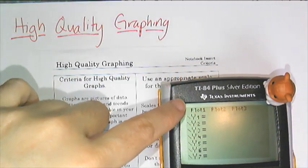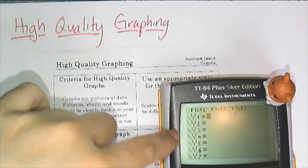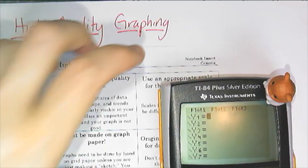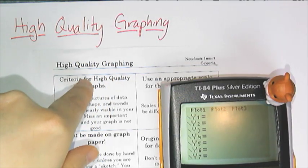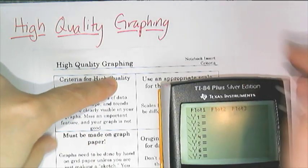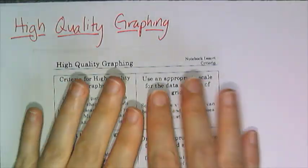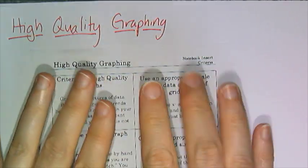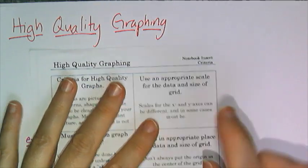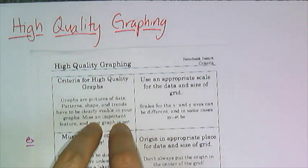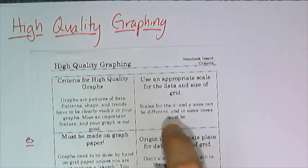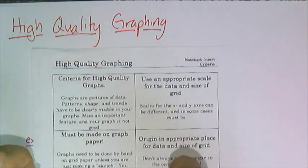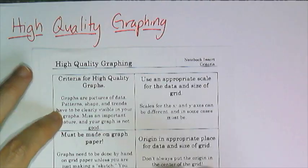So this is something that's really good for when we want to graph a bunch of things quickly, but if I want to make sure that you know how to graph and you know what a good graph has, then you need to follow these criteria here called high-quality graphing. You don't have to copy these criteria down — it's a notebook insert, so you are going to get a copy of this to keep in your notebook. Note that this is also glued to the wall of my classroom. If you look over where the graphing calculators are, you'll see a bunch of colored papers, and those colored papers will have these criteria on them.